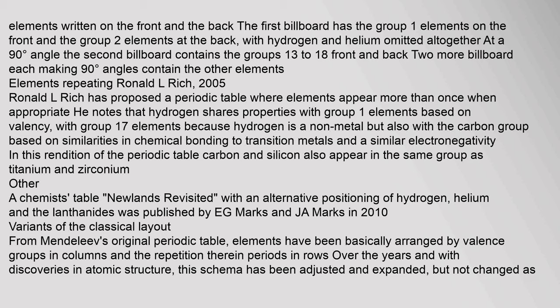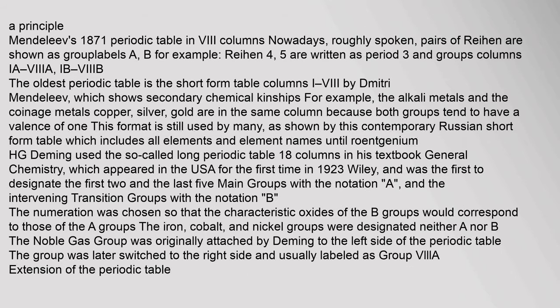This schema has been adjusted and expanded but not fundamentally changed. Mendeleev's 1871 periodic table had eight columns. Nowadays, pairs of rows are shown as group labels A and B; for example, rows 4 and 5 are written as period 3 with groups Ia–VIIIa and Ib–VIIIb. The oldest periodic table is the short-form table with columns I–8 by Dmitry Mendeleev.